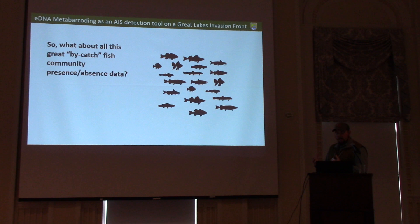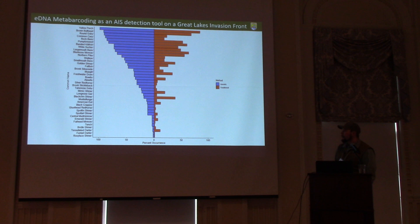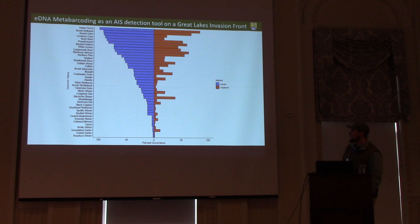What about all the extra bycatch data that eDNA metabarcoding provides? I wanted to look at that in relation to our traditional sampling from a fish community and diversity perspective, because you get so much great presence-absence data back with metabarcoding. One key question was: how well does the eDNA fish community data complement traditional fisheries efforts? Here's a divergent bar chart showing fish captured or detected depending on method. Common names are on the left, percent occurrence on the bottom. Blue bars represent the genetic method — metabarcoding — and orange represents traditional, mainly electrofishing. Metabarcoding is pretty good at detecting fish and, to some degree, representing the abundant species we also catch traditionally.